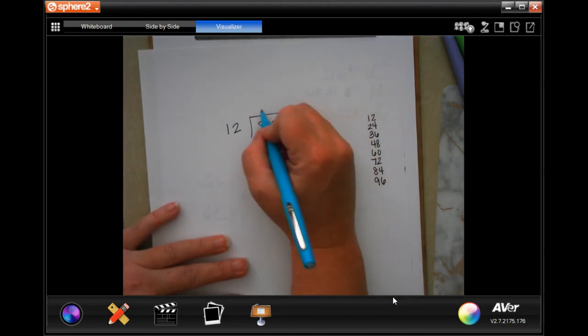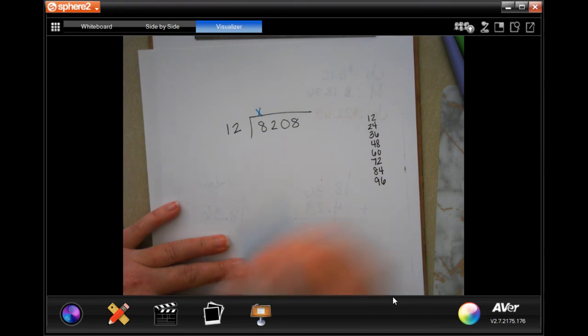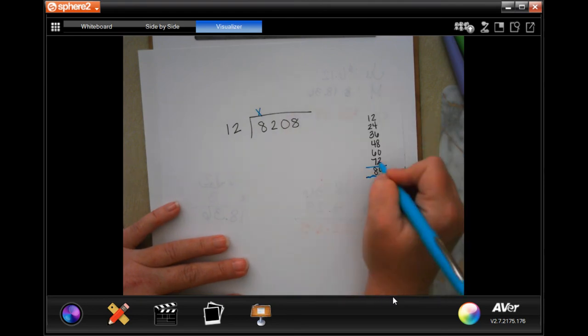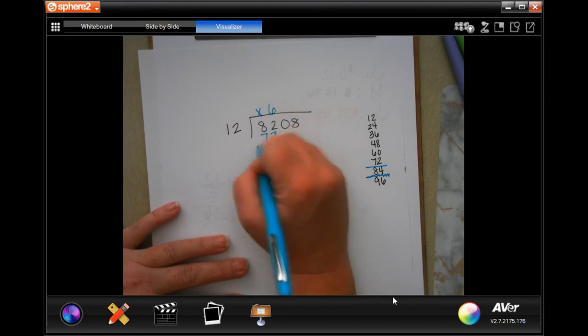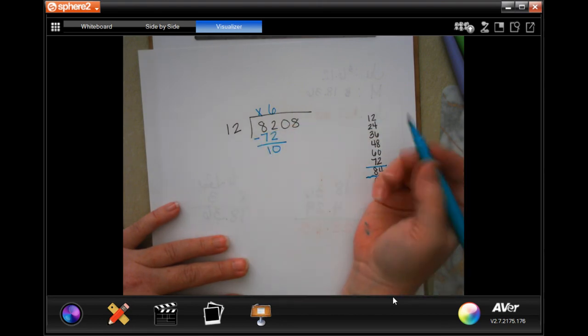12 is not going to go into 8. Placeholder. 12 will go into 82. 84 is too big. Sorry. 72. It's going to be 1, 2, 3, 4, 5, 6 times. 6 times 12 was 72. We subtract. We're going to get 10. Now, 10 is smaller than 12. So I'm going to go ahead and bring down my 0.